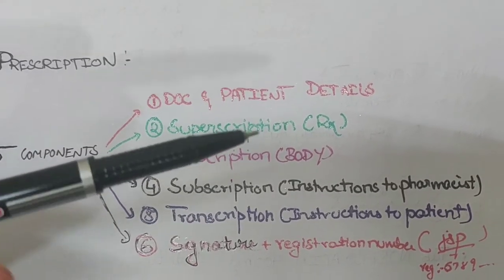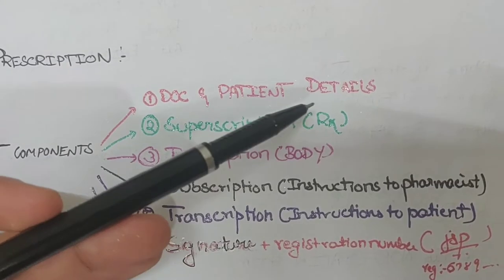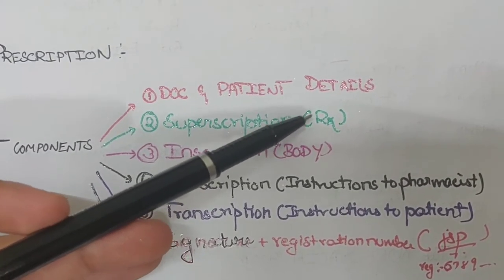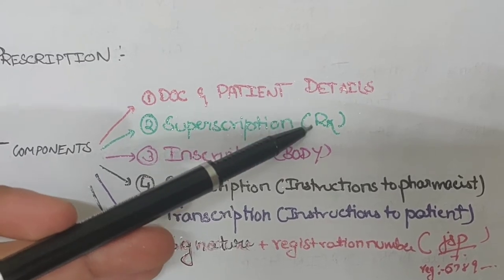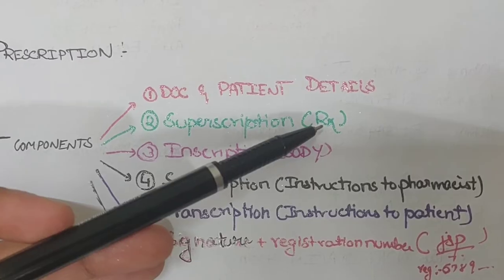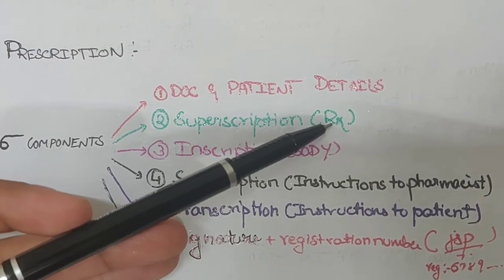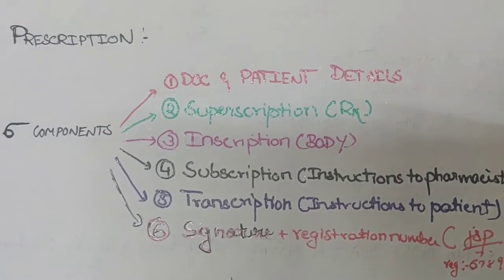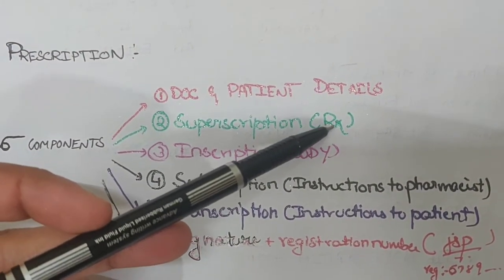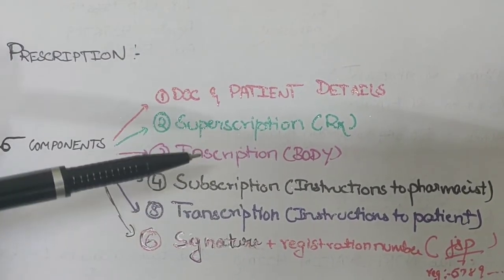Next is the superscription, denoted by the Rx symbol. It is the abbreviation for the Latin word 'recipe,' meaning 'to take.' It indicates an appeal to Jupiter, the god of healing. So it comes from Latin and is denoted in any prescription.